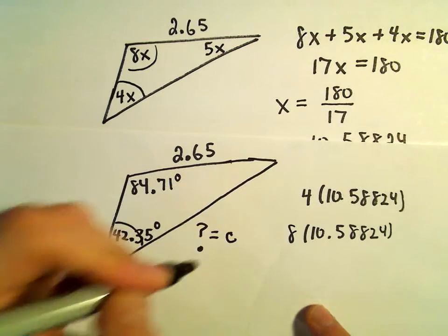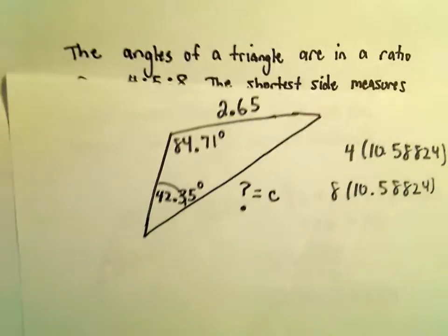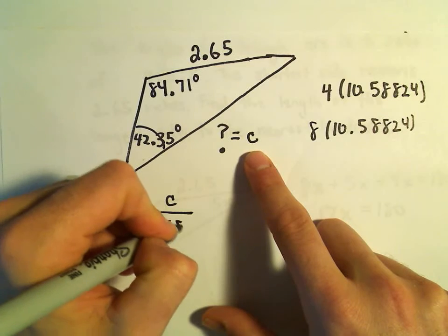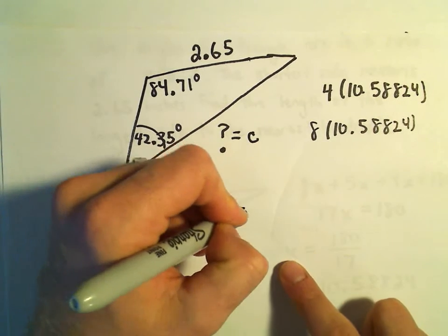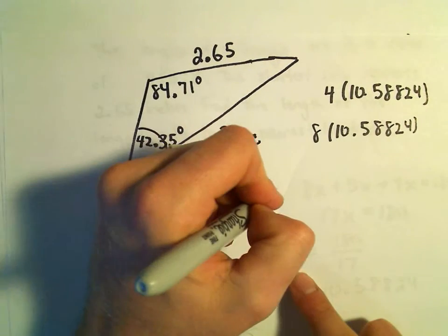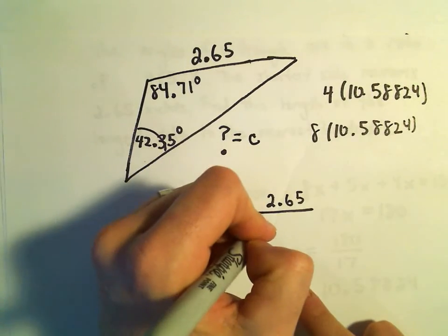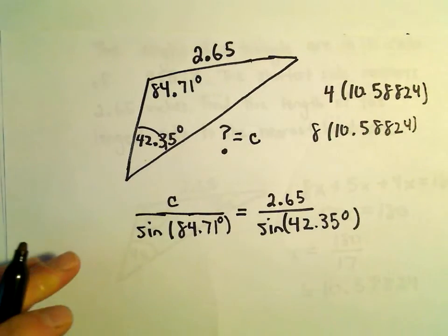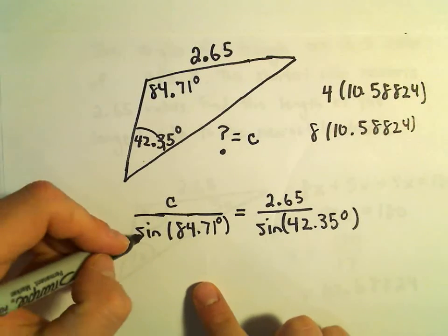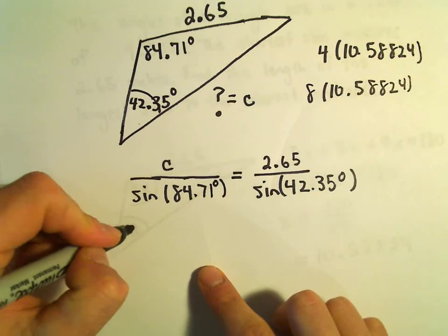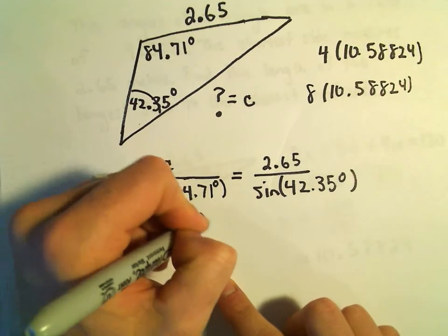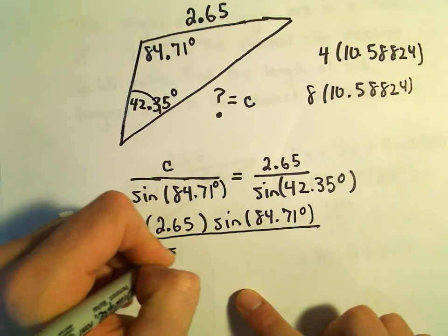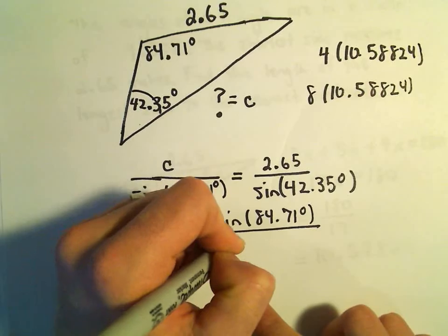And now we've got enough information to use our law of sines. So maybe we can call this missing side, we'll call that side length C. So now if we use the law of sines, it says if we take our missing side C over sine of 84.71 degrees, that's going to equal the side length that we do know, which is 2.65 over sine of the angle opposite that, which is going to be 42.35 degrees. So now to solve for C, we'll just multiply both sides by our sine of 84.71 degrees. So we'll get that C is 2.65 times sine of 84.71 degrees all over sine of 42.35 degrees.